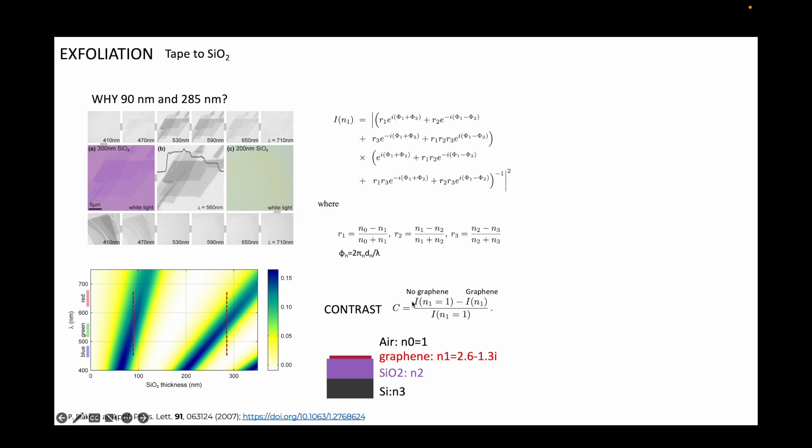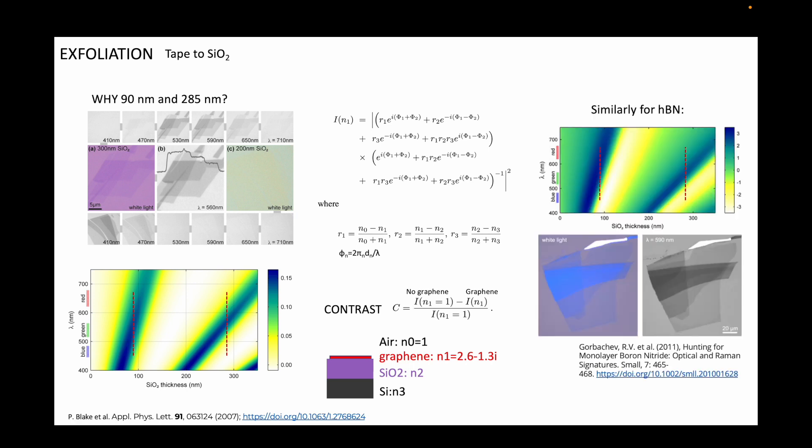Then the contrast is defined as the difference in the intensity with and without graphene. As you can see on your right, the same technique can be used to distinguish monolayers of hBN, which is even more difficult than graphene to identify. And thanks to this paper, the standard wafers used in 2D labs is now 90 nm and 285 nm.